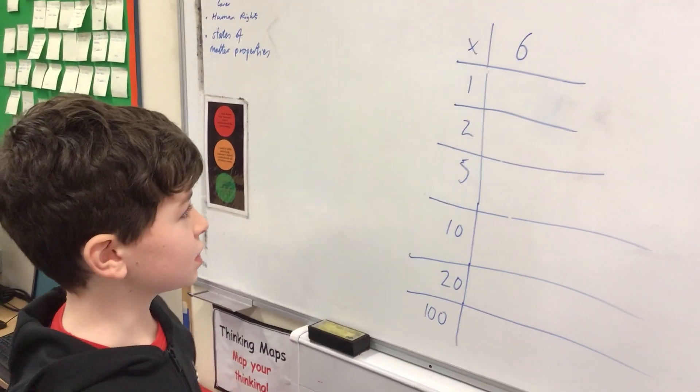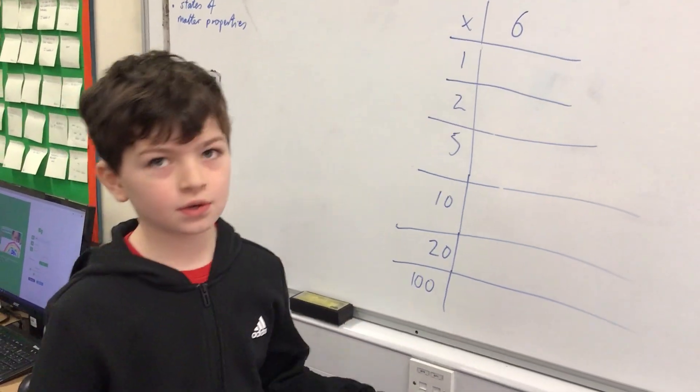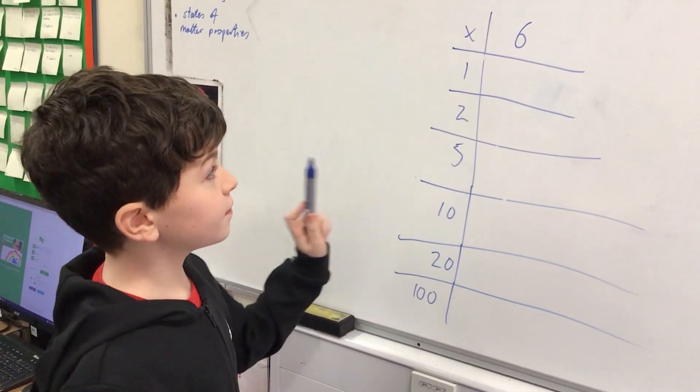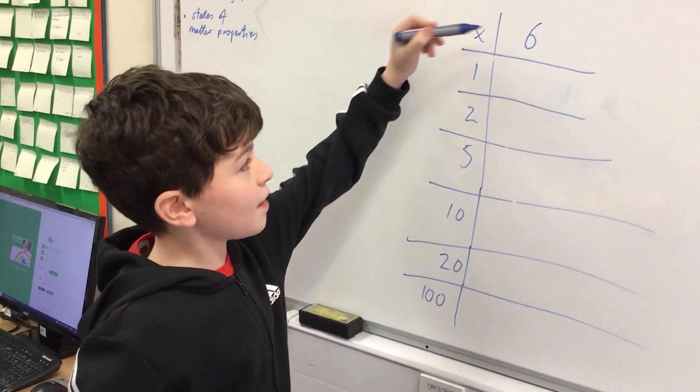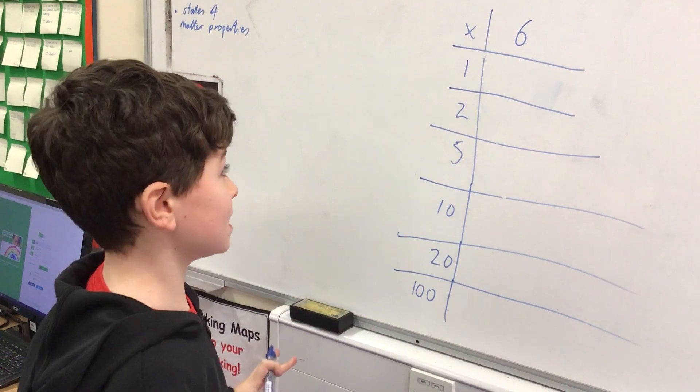This is coin multiplication. Basically, you get these numbers on the side which are the coins in our pocket, times by whatever number you choose at the top. In this case, we're doing six.